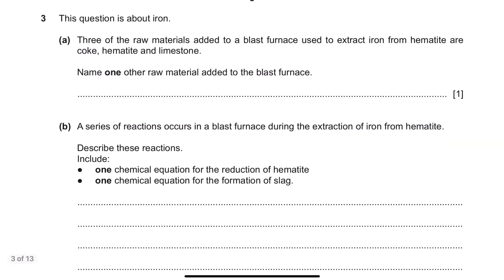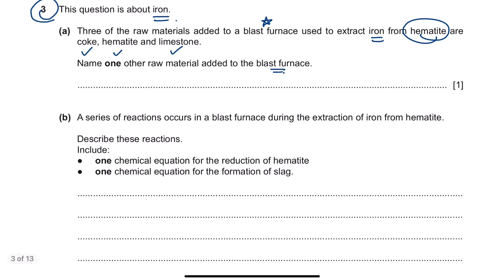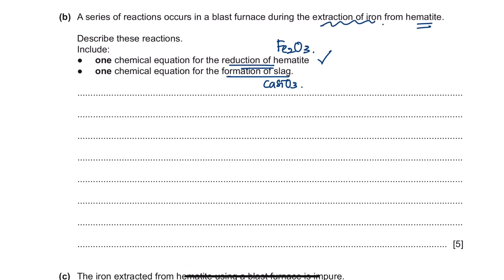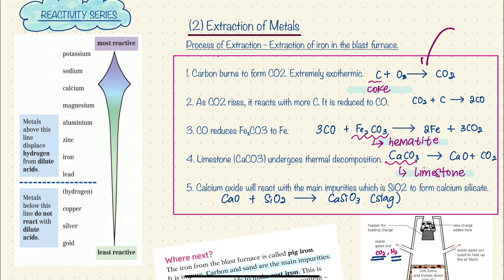This is the question from May/June 2018 Question 3, about iron. Three raw materials added to a blast furnace to extract iron from hematite ore are coke, hematite, and limestone. The question asks you to name another raw material — the answer is hot air. Part B asks you to describe the reactions in the blast furnace, including one equation for the reduction of hematite and one for the formation of slag. You need to list all five reactions.